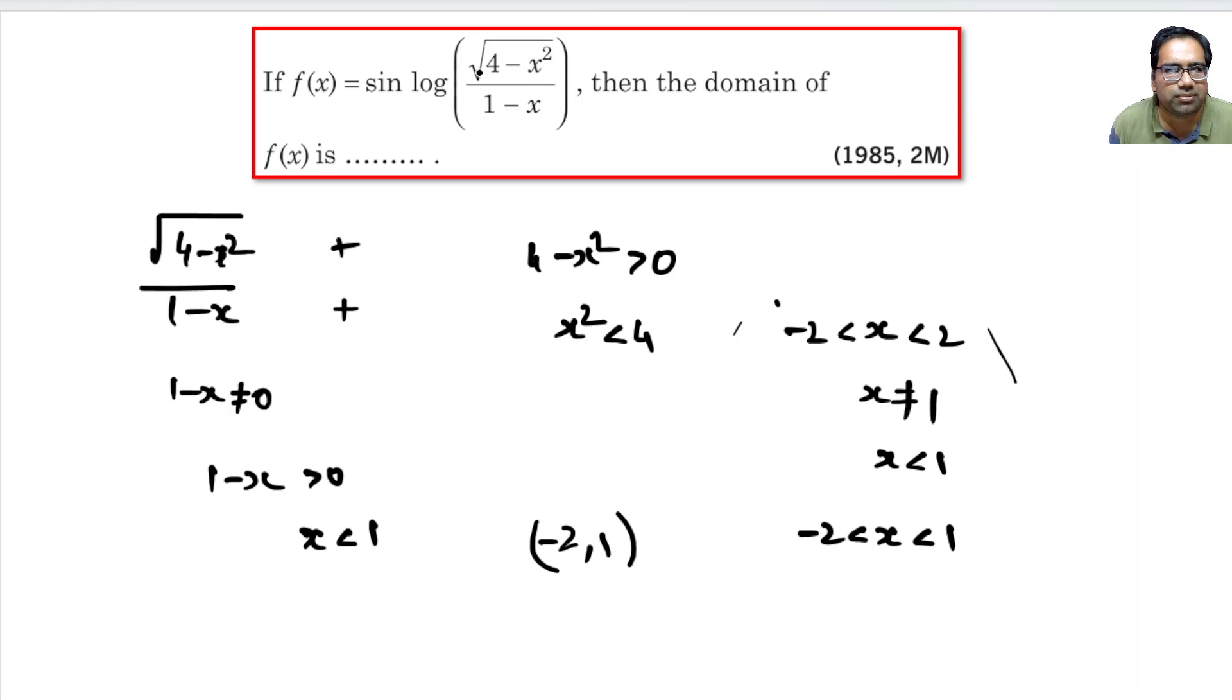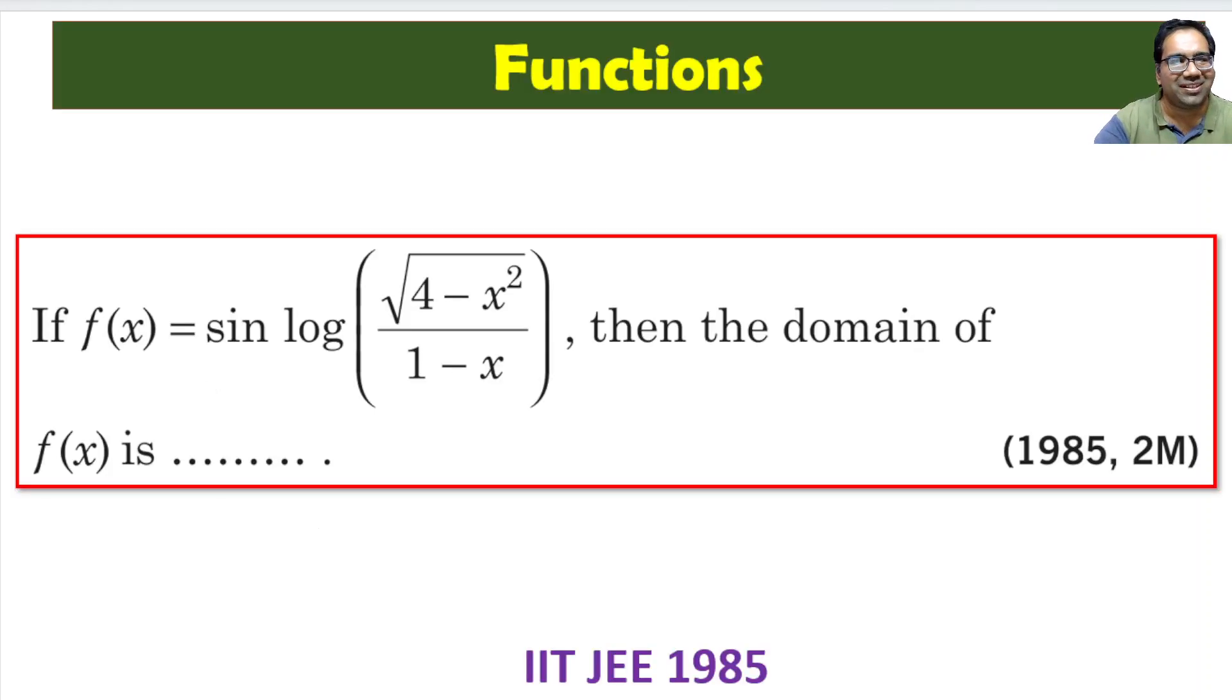We cannot take -2 because this will become 0. We cannot take 1 also. So this is the correct answer: (-2, 1). Very simple problem. Hope you like this. Thank you.